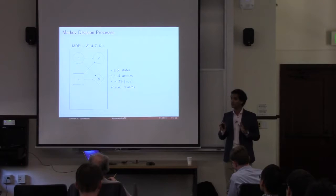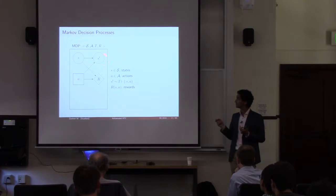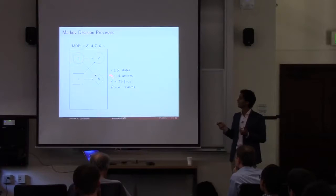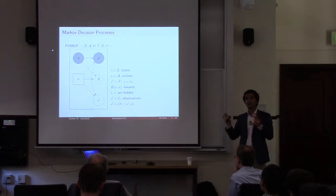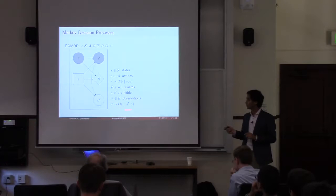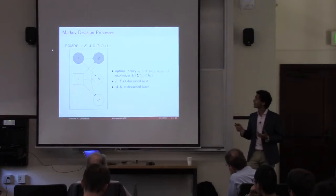An MDP has this tuple of state, action, transitions, and rewards. The state of the next time step is determined by the action and the state of the current time step, and rewards are also a function of actions and current state. MDPs are a special case of POMDPs. In a POMDP, states are not directly available; instead, you have observations distributed from those states. The goal in both MDPs and POMDPs is to optimize discounted rewards over a finite horizon — to come up with optimal policies.